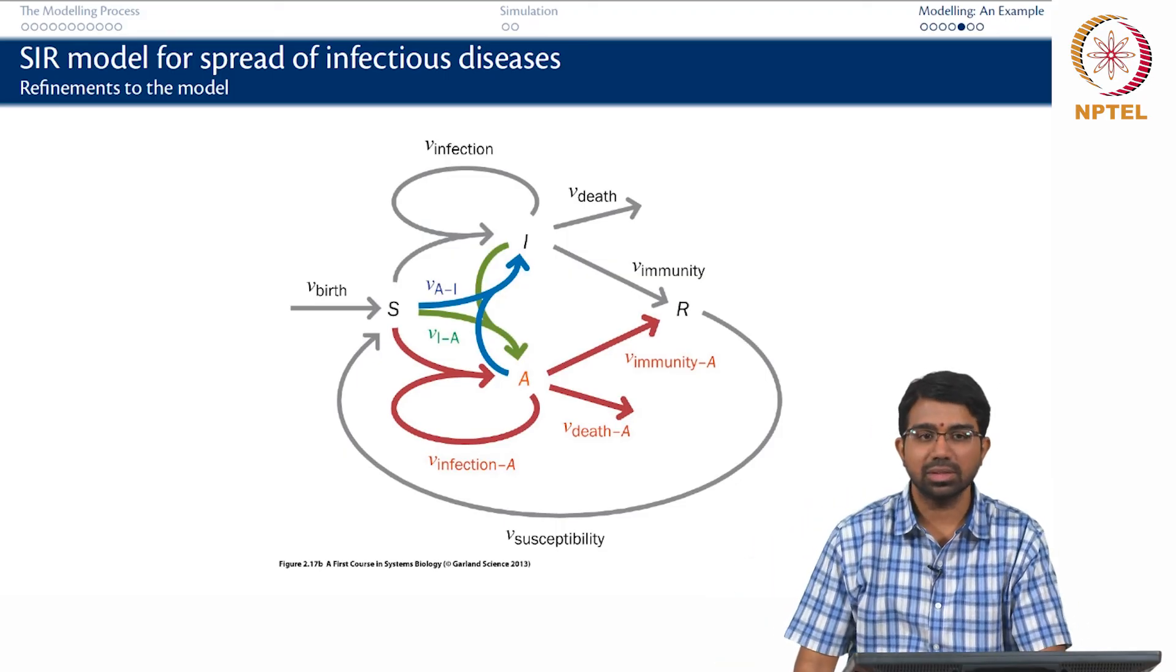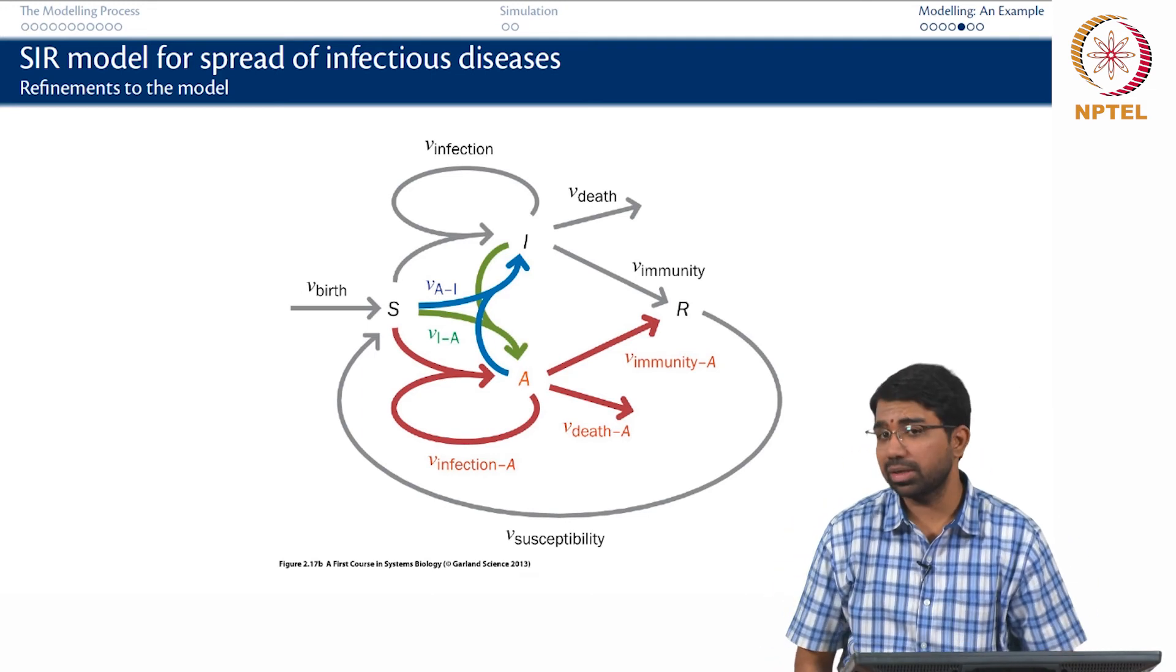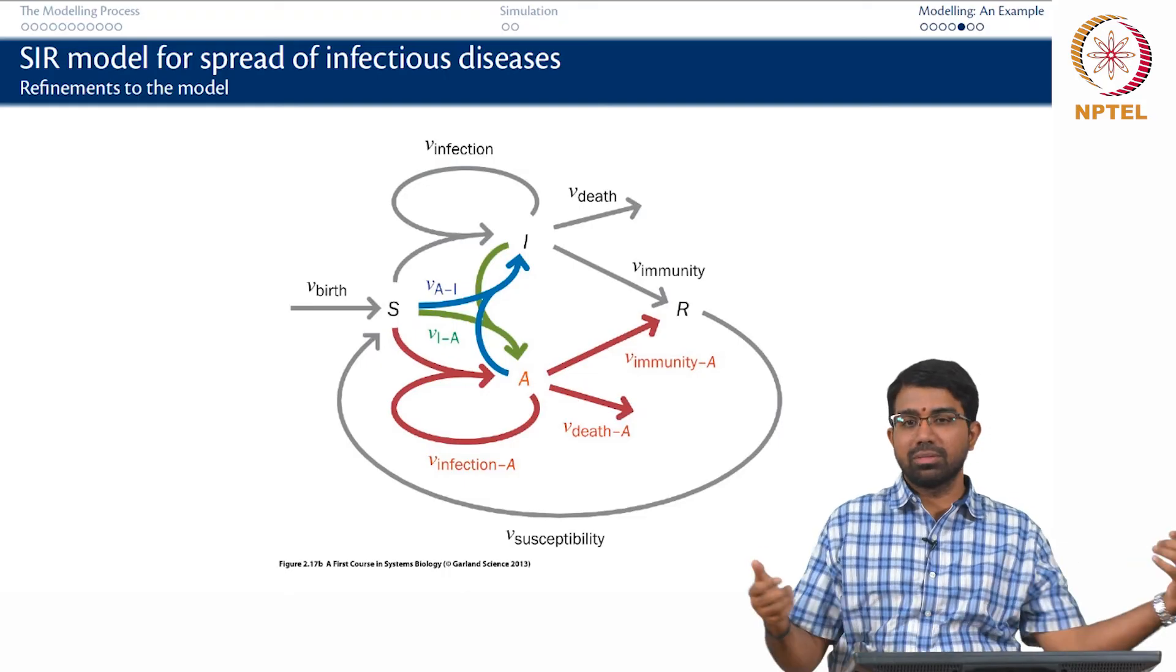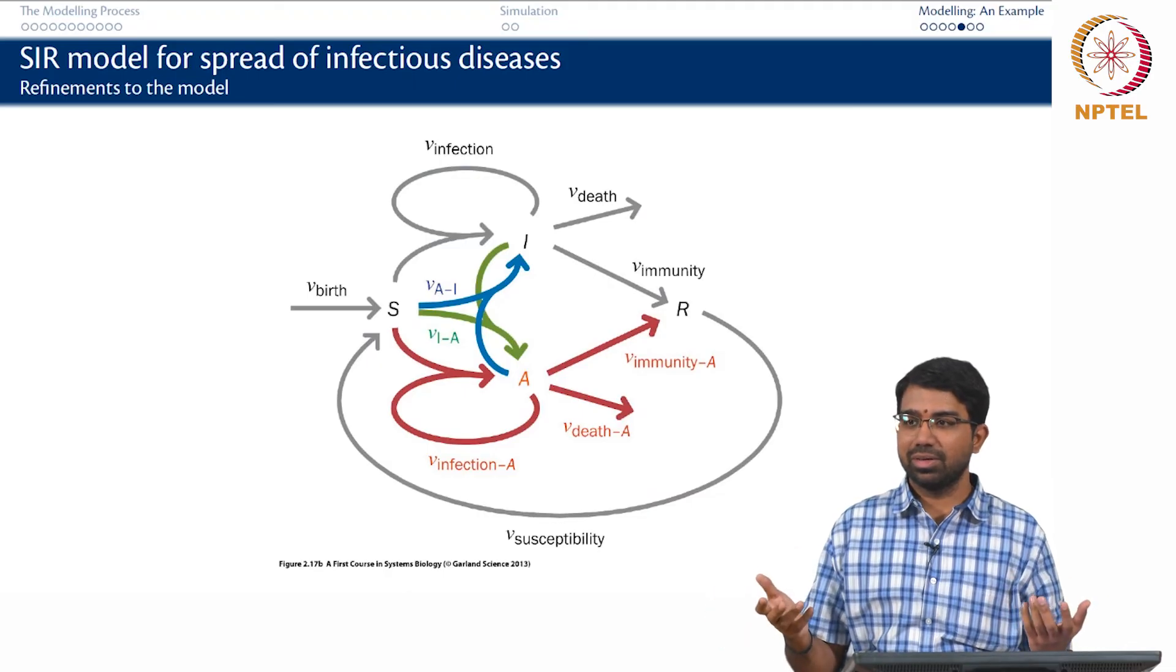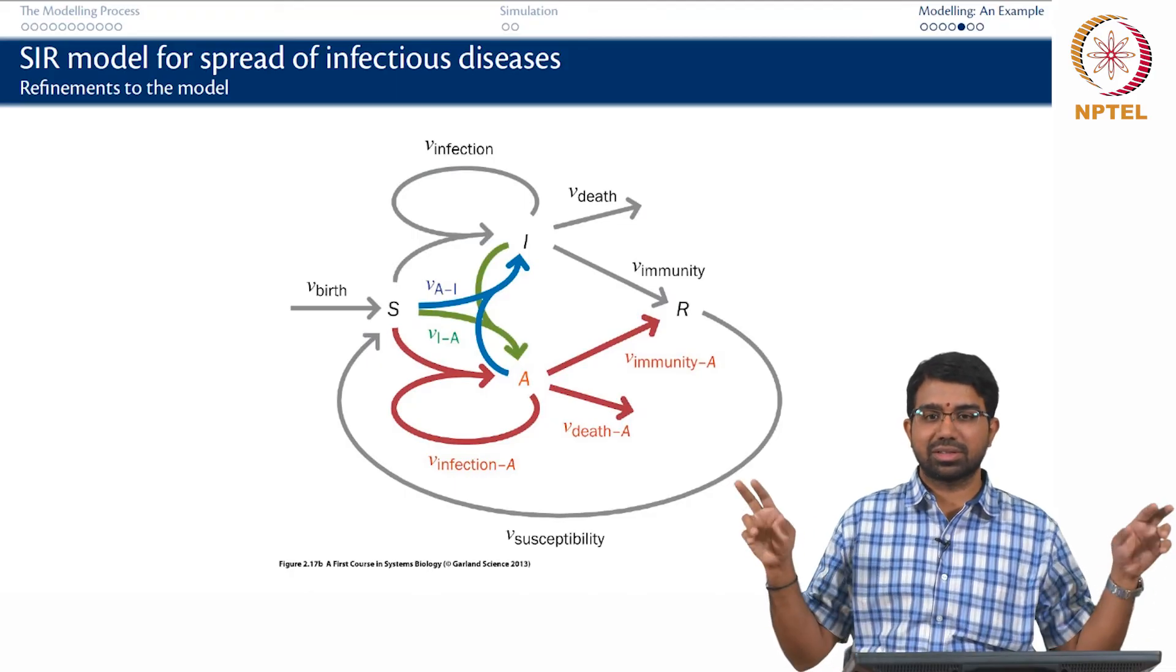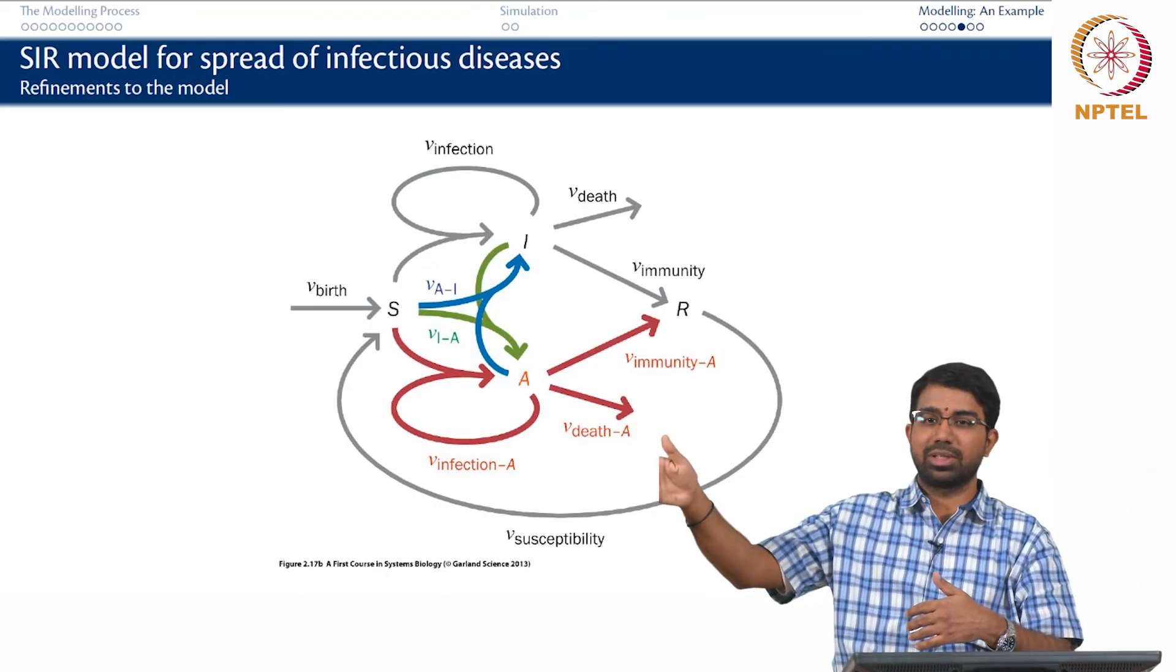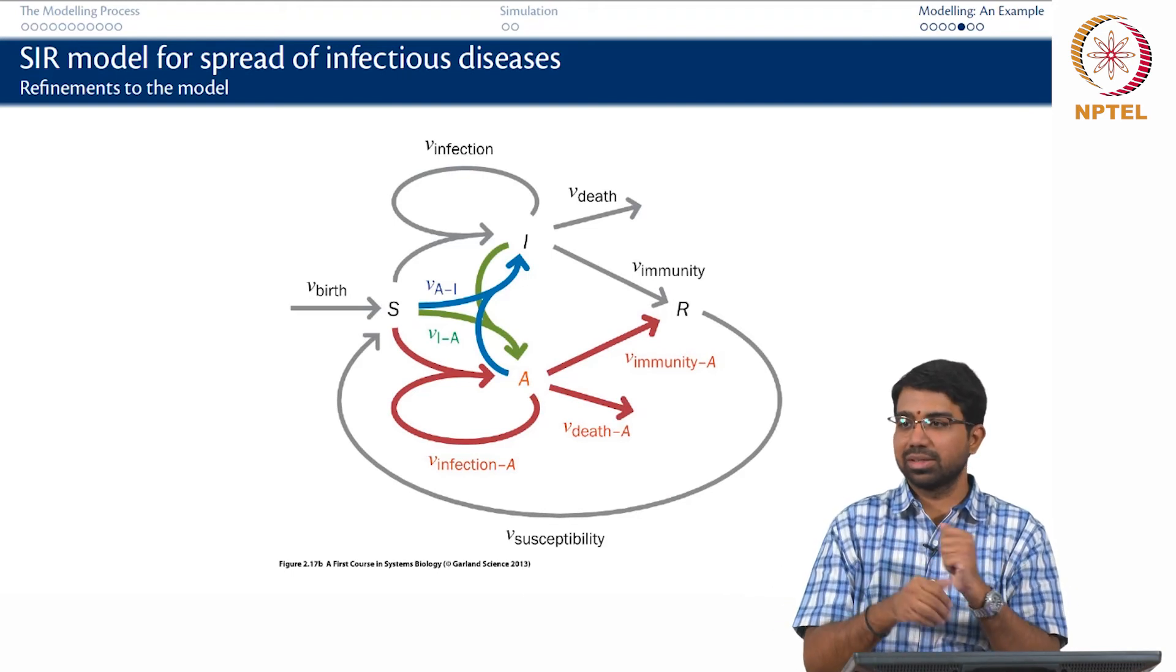Any questions? Many more enhancements to this model you can think about. You can have, you may want to worry about people immigrating and emigrating from the city for example. If those rates are high enough and in fact, that is very important when you have a disease that is international in origin. The whole of swine flu, people were worried about who is traveling in from Mexico, who is traveling out to some other part of the world and so on. And airports became the hub for spreading the disease or containing the disease and so on.